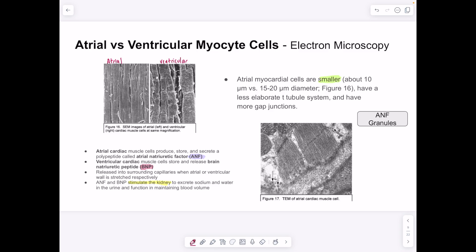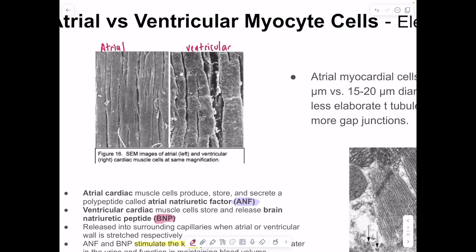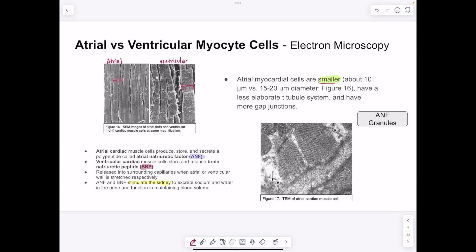Atrial versus ventricular myocytes differ in thickness: atrial myocytes tend to be smaller with a less elaborate T-tubule system and more gap junctions. Importantly — from the lecture — atrial myocytes release atrial natriuretic factor (ANF), and ventricular cardiac myocytes release brain natriuretic peptide (BNP). Both are hormones stored in granules in the cell. Both ANF and BNP stimulate the kidneys to excrete sodium and water in urine to help maintain blood volume.